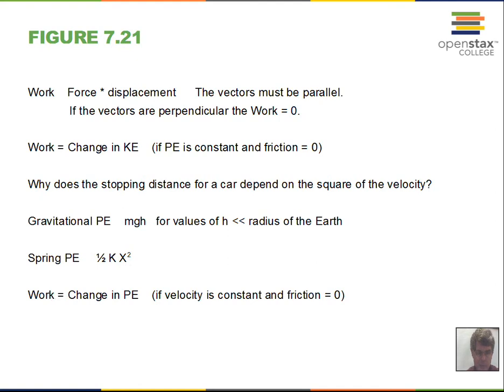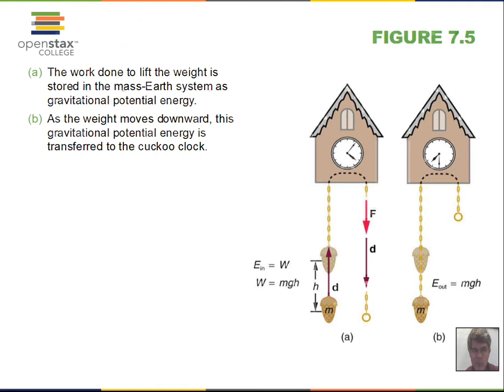An example of potential energy: a clock with a weight that keeps the drive mechanism operating. Someone can rewind the system by lifting the mass a distance h — doing work mgh — which supplies the clock with energy it slowly drains to operate its mechanism. That's an example of gravitational potential energy mgh.